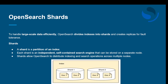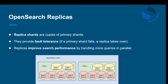A shard is just a partition of an index, so large datasets are split into shards for efficiency. It increases efficiency, and since each shard is an independent search engine, it distributes the workload across multiple nodes to process data in a very efficient way.